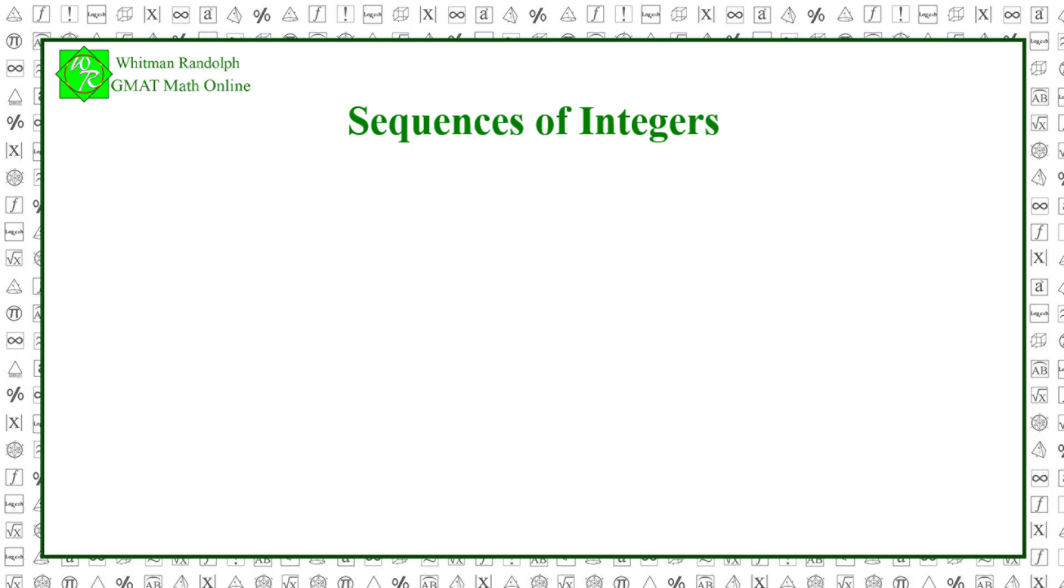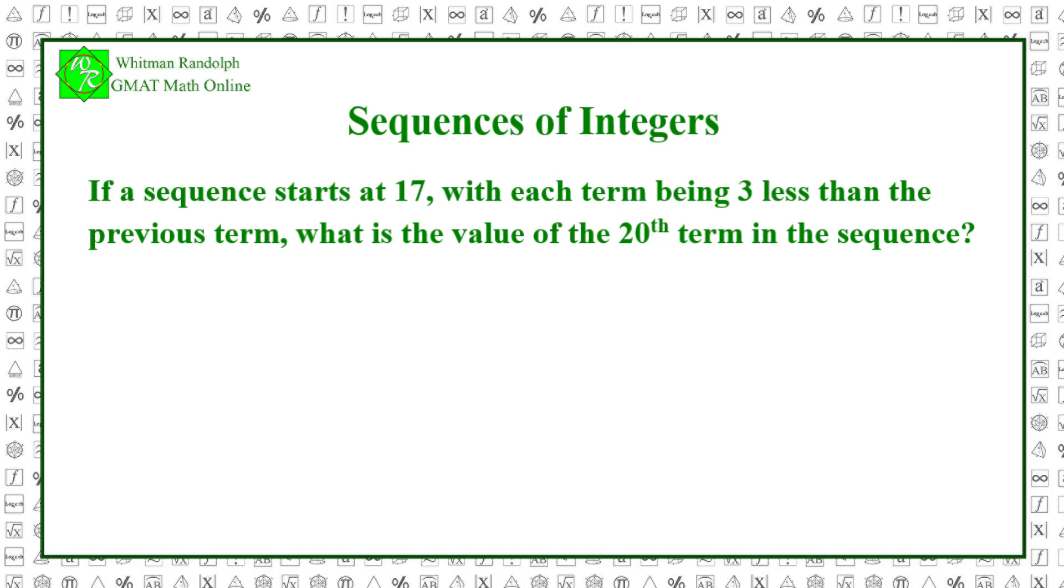Here's a sample problem. If a sequence starts at 17, with each term being 3 less than the previous term, what is the value of the 20th term in the sequence? And here are some possible answers.